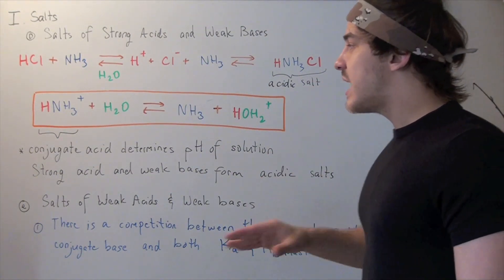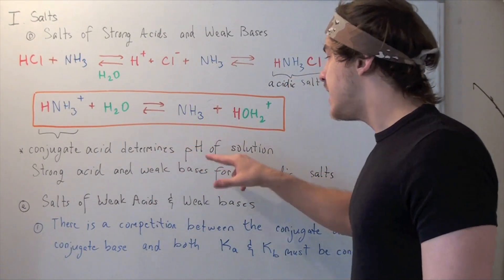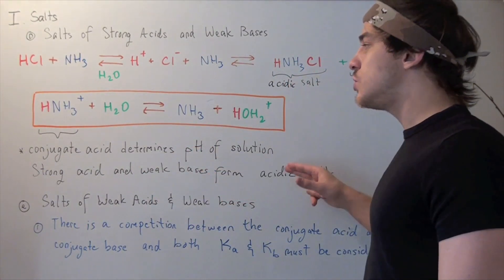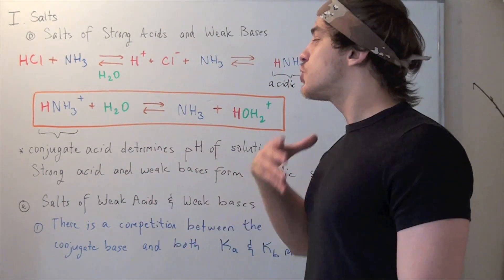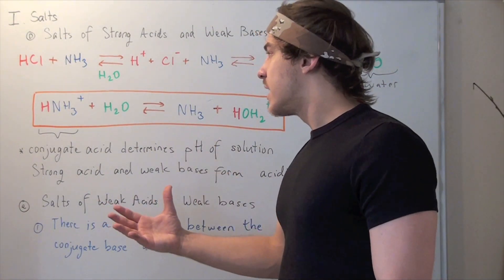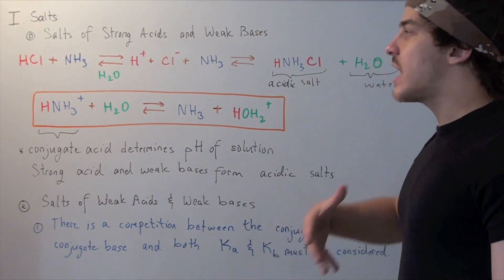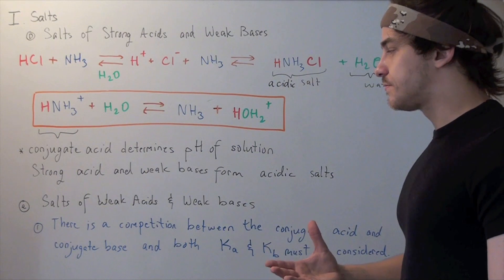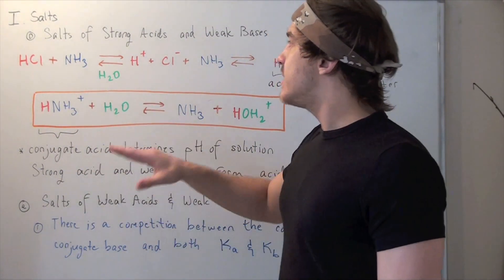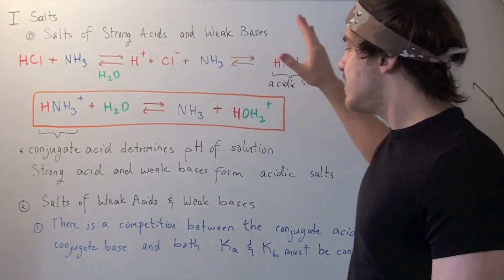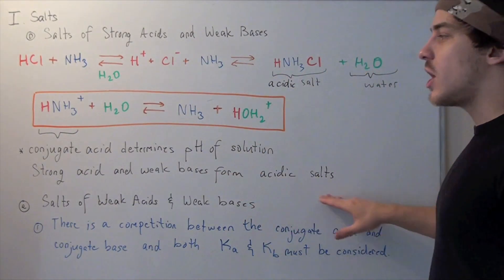Therefore, the conjugate acid determines the pH of our solution. The higher the Ka, the stronger the conjugate acid and the more acidic the salt. Whenever we mix strong acids and weak bases, we create acidic salts.